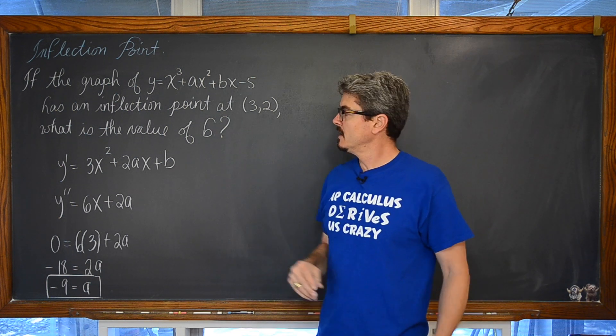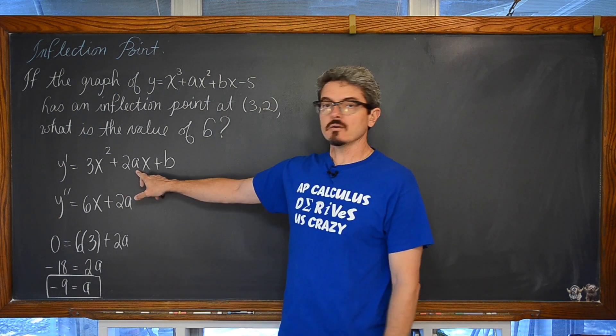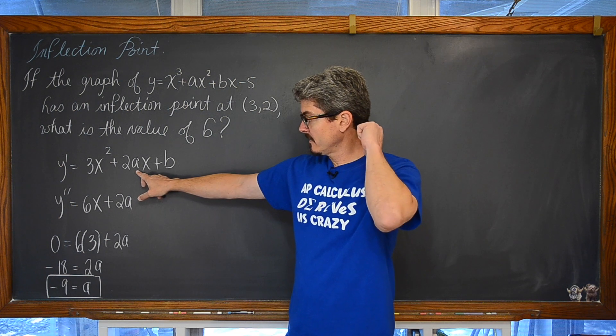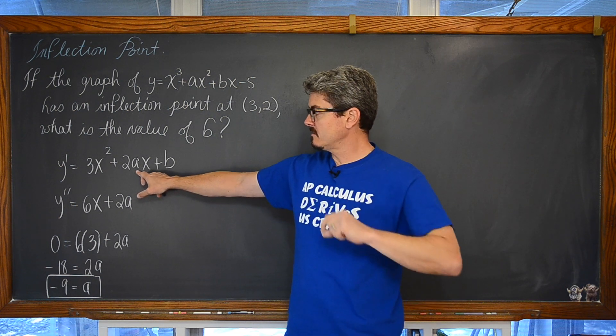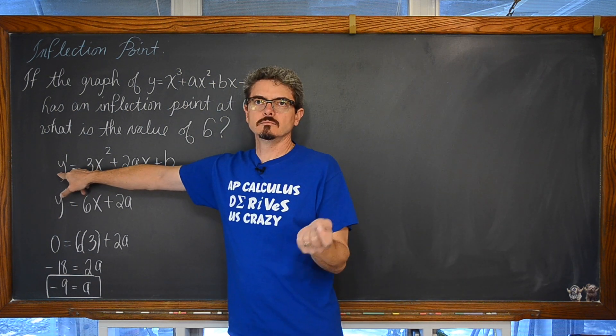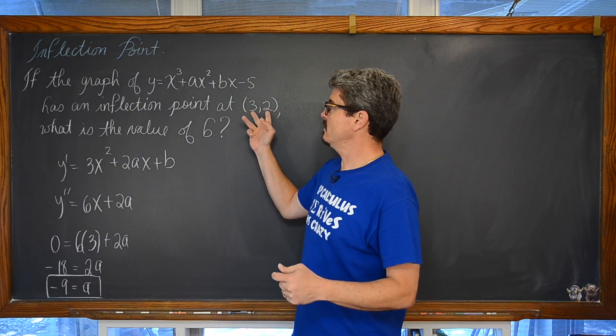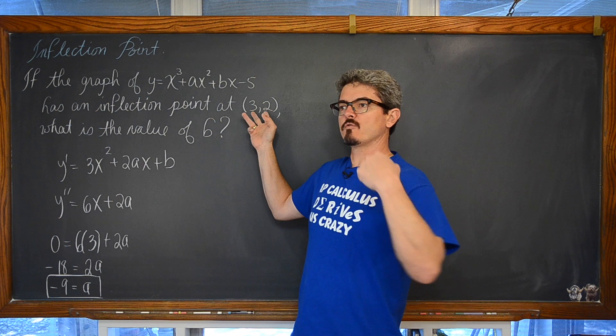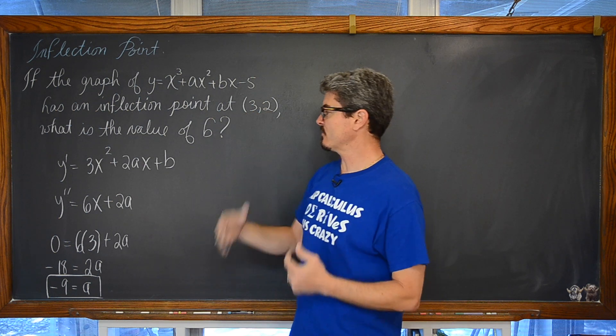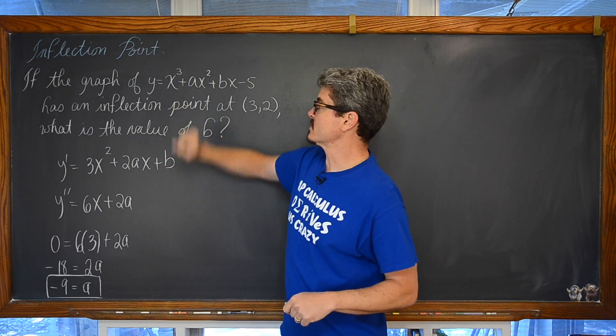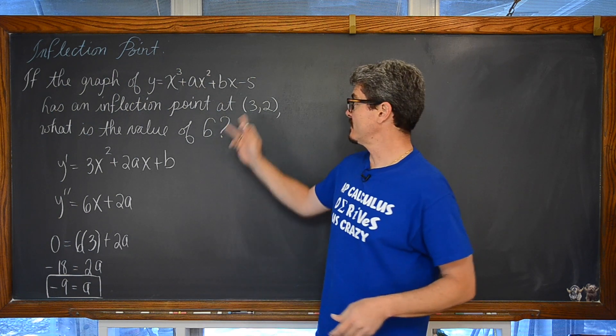Does it go into the first derivative? Because I can put negative 9 here, which is fine. But I don't know what the point is for the original function. I don't have any information about the slope of this graph at the x value of 3.